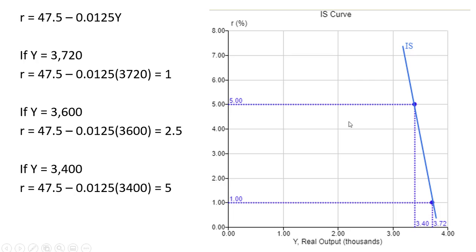If we graph those points, we have our downward sloping IS curve. On the x-axis, I just put the real output in thousands. So 3.4 is 3,400, and 3.72 is 3,720, which corresponds to our real interest rate of 1%.